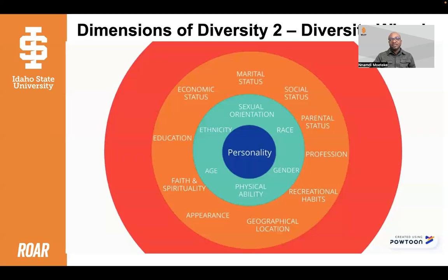Some authors also add a third layer — the tertiary dimensions. These are farthest from the core of the individual. They include things like hobbies and interests, nonprofits or volunteer involvement, political or social course involvement, and life experiences. These are farthest from the core because they are often situational and change the most throughout one's life, and so may not have as much impact on one's perspectives, experiences, or interactions.